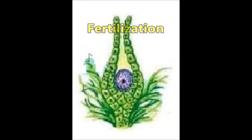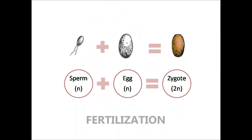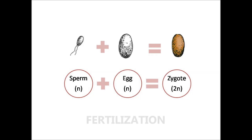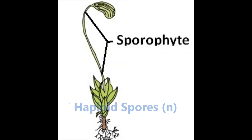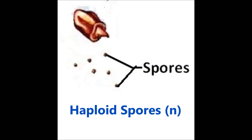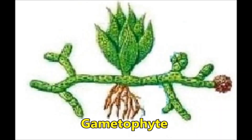Fertilization: Antherozoids are released into water and come in contact with the archegonium. Antherozoids and egg fuse together to form diploid zygotes that grow into sporophytes. Sporophytes produce haploid spores by meiosis that grow into gametophytes.